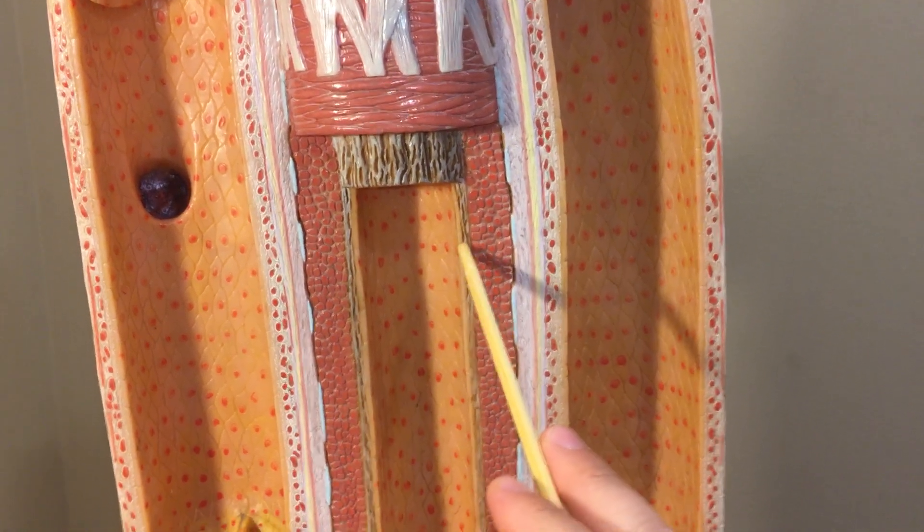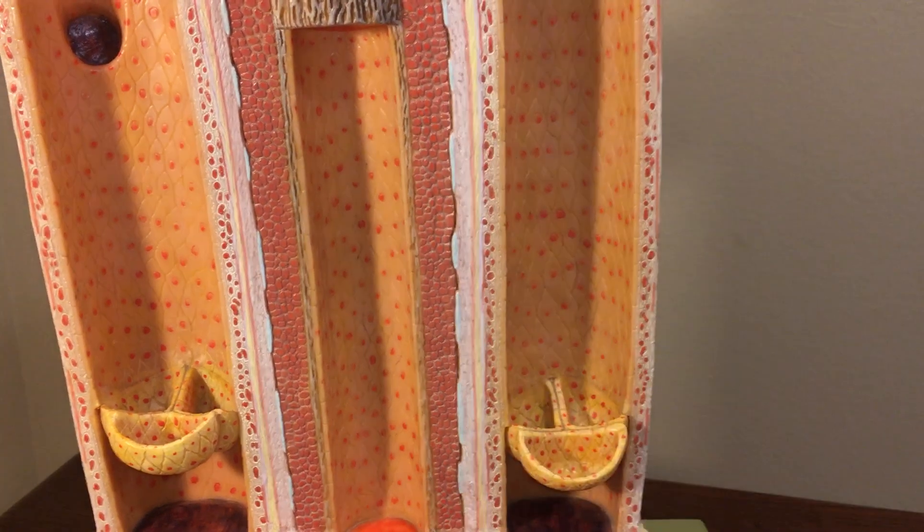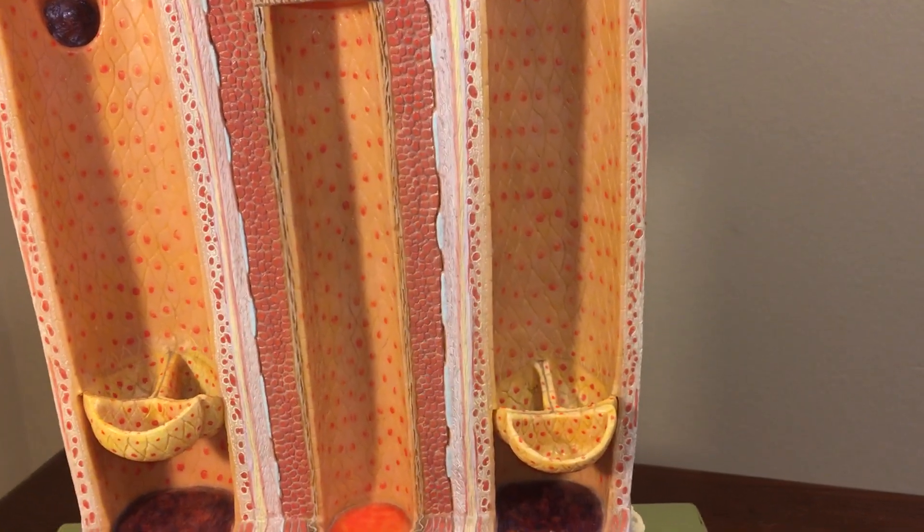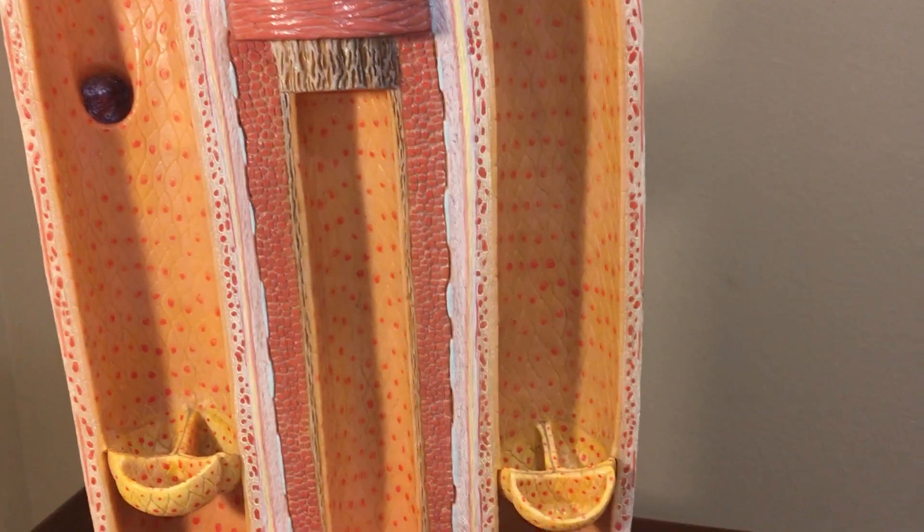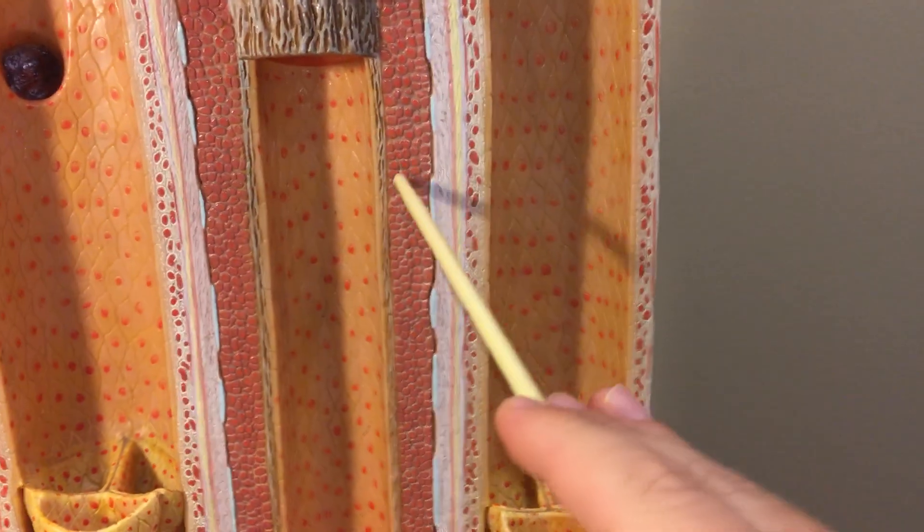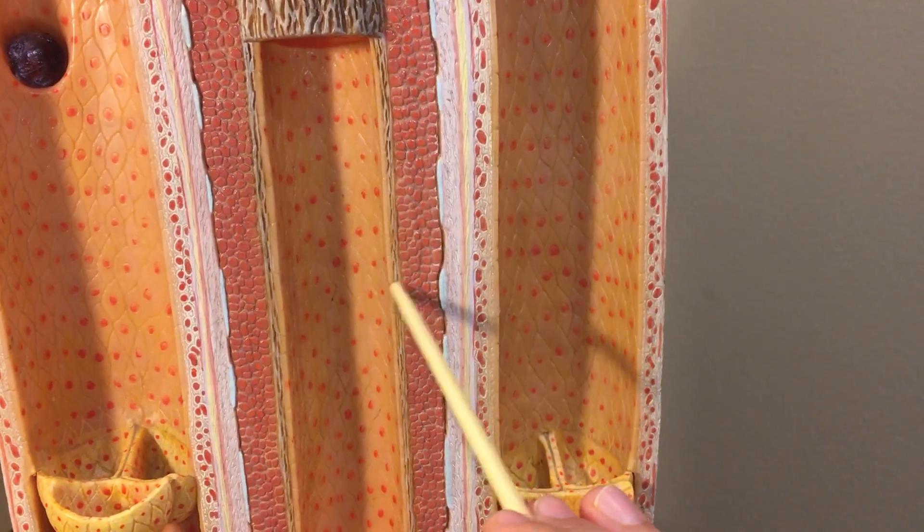But if this was an elastic artery, like our aorta slide, I recommend that you look at Professor Graziani's videos on the aorta for histology. And you'll see that its tunica media has all these elastic fibers in there. This doesn't.